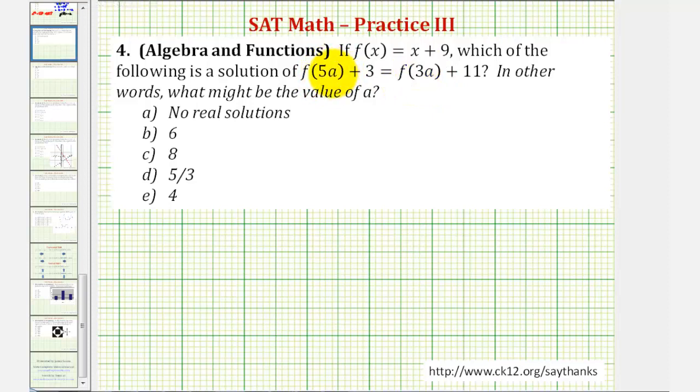To determine f of five a, we'll use function f and substitute five a for x. So for f of five a, if we substitute five a for x, instead of x plus nine, we would have five a plus nine.